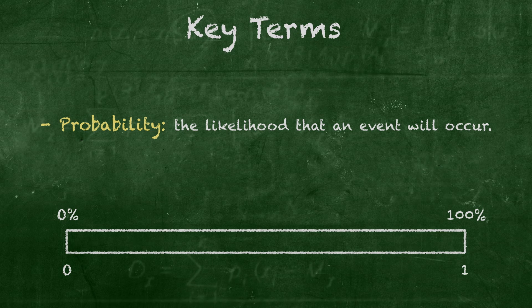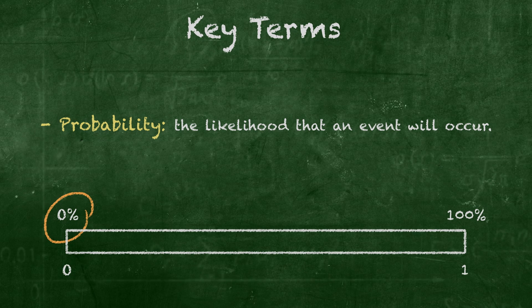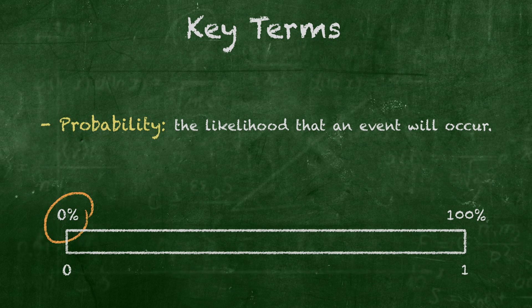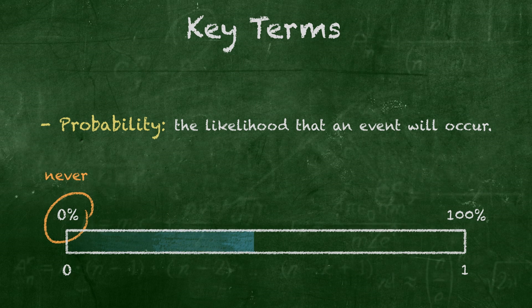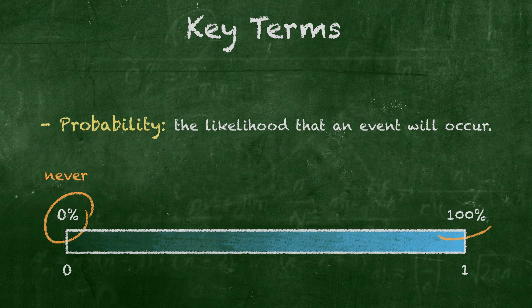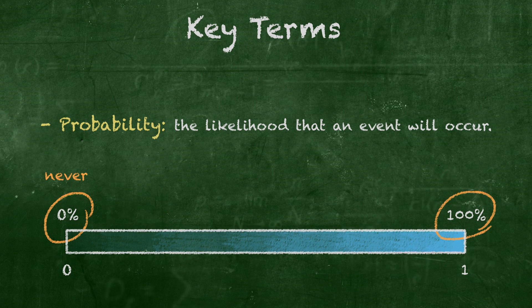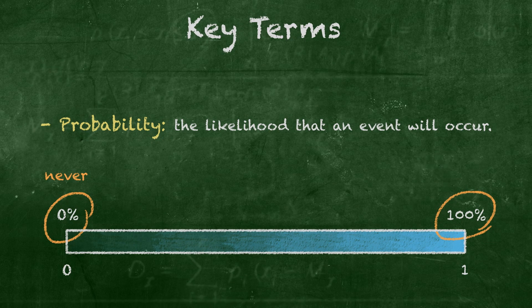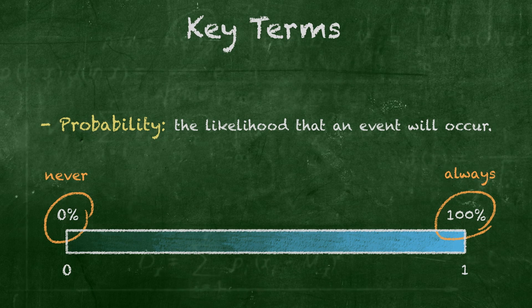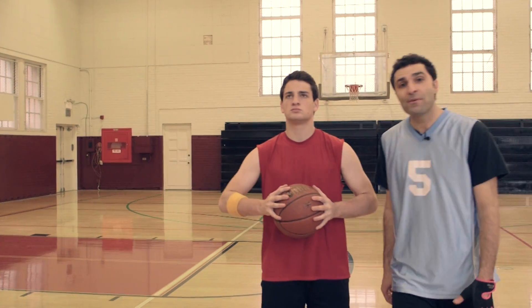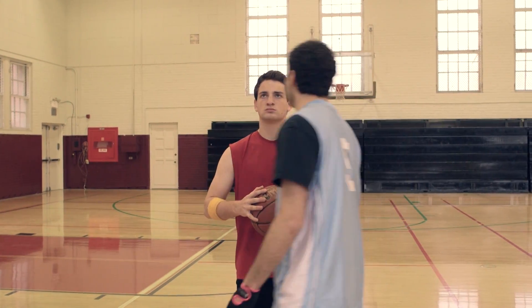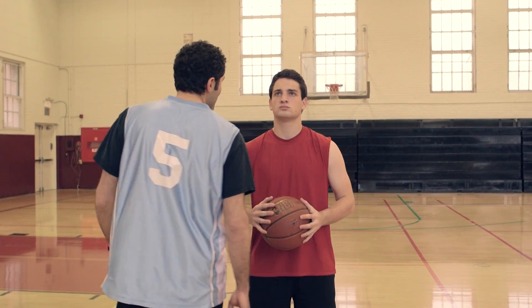A probability of 0%, or 0, means the outcome will never occur, while a probability of 100%, or 1, means it always will. Now let's begin to understand the language of probability, as we let A represent the probability that Jordan makes his first free throw.